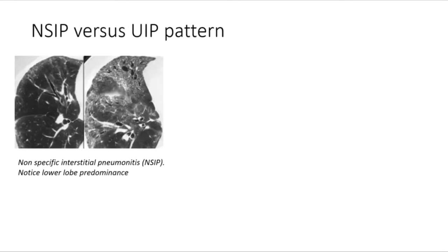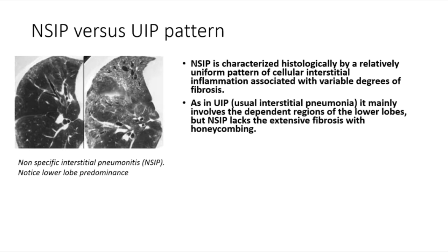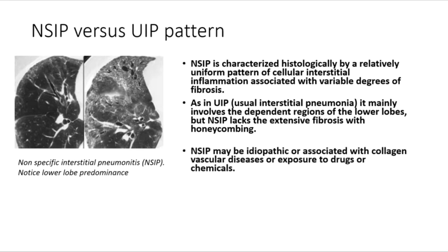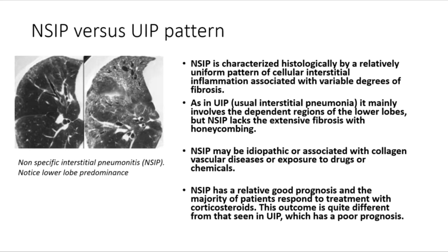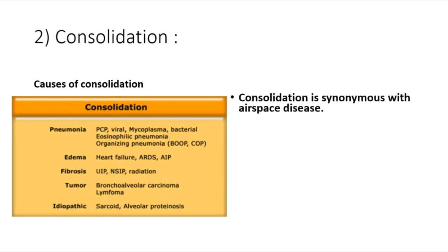NSIP is characterized histologically by a relatively uniform pattern of cellular interstitial inflammation associated with variable degrees of fibrosis. As with UIP (usual interstitial pneumonia), it mainly involves the dependent regions of the lower lobes, but NSIP lacks extensive fibrosis with honeycombing. NSIP may be idiopathic or associated with collagen vascular diseases or drugs. It has a relatively good prognosis, with the majority of patients responding to corticosteroids — quite different from UIP, which has a poor prognosis.